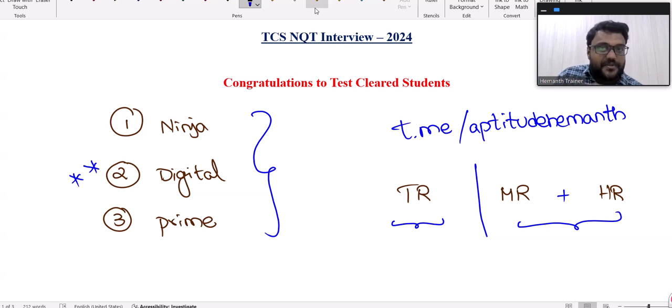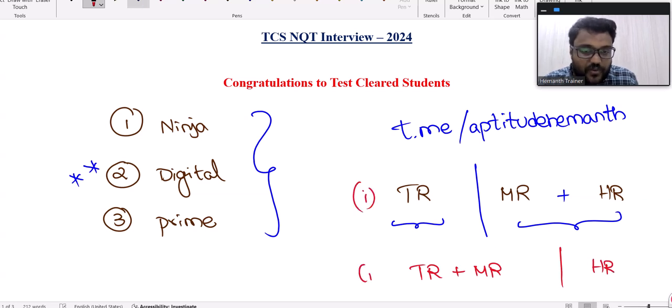Maximum combination is TR, then MR plus HR. Or it will be TR plus MR. Worst case it can be TR, MR, and HR separately, but most of the time this combination will work out.